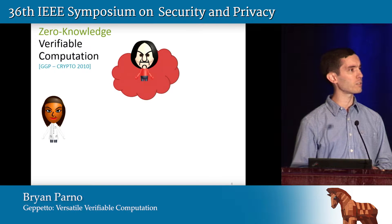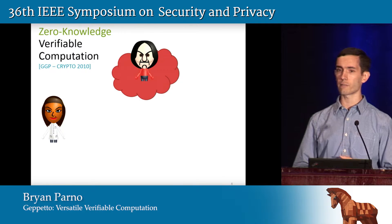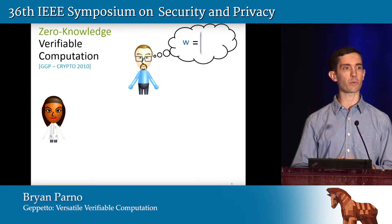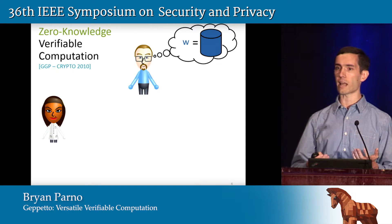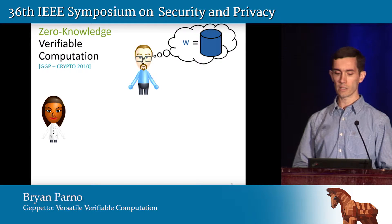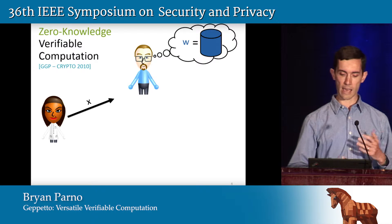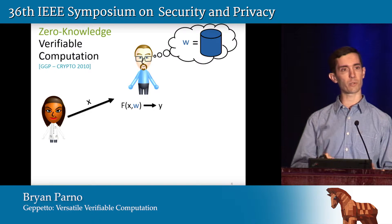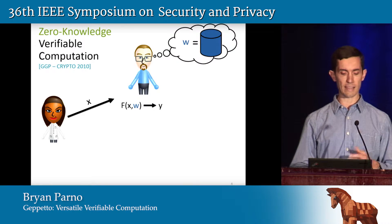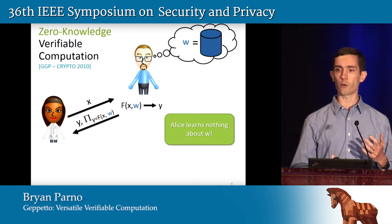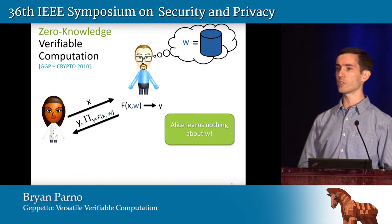We can add a flavor of zero knowledge to this entire setup. Here it's better to think of the cloud as another scientist who has access to a private database. He's willing to let Alice compute over it but doesn't want to give her direct access. Alice provides her input to Bob, Bob computes a function of both inputs, and sends back a proof that convinces Alice the computation was done correctly even though Alice learns nothing about Bob's input.